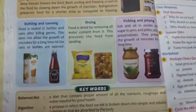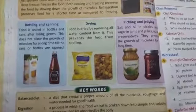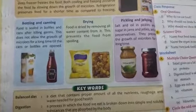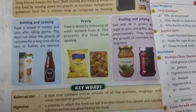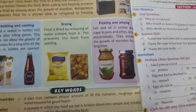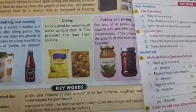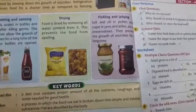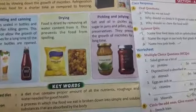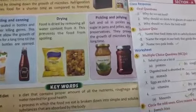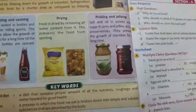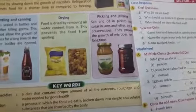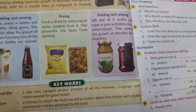In drying, food is dried by removing all water content from it, and this prevents the food from spoiling. In pickling and jelling, salt and oil in pickles and sugar in jams and jellies act as preservatives, preventing the growth of microbes for a long time.